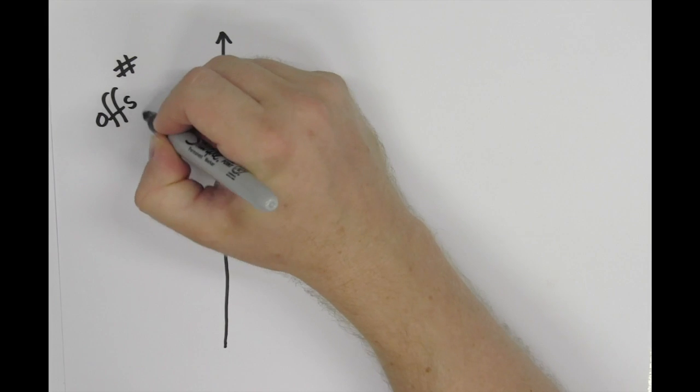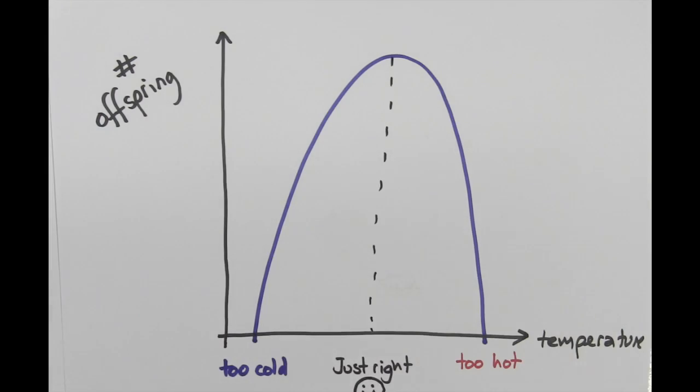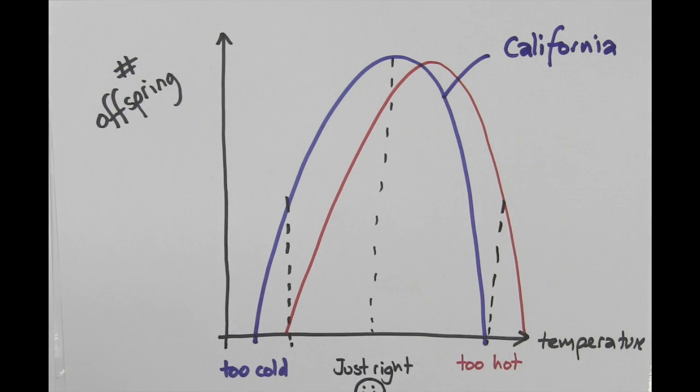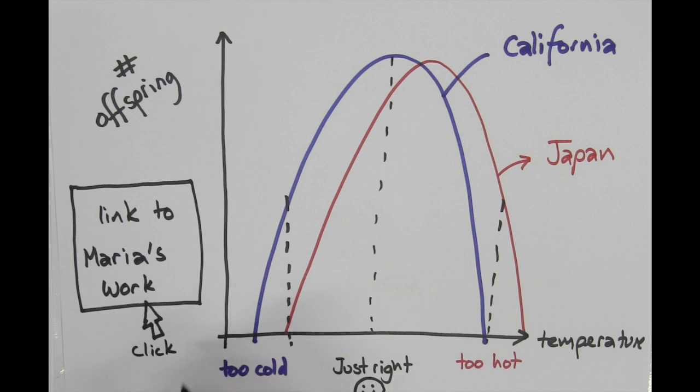Looking in more detail, we measured the total number of offspring over a range of temperatures. The strain from California does better at lower temperatures, but the strain from Japan does much better at higher temperatures. This is just like what we see for two other species of nematode.